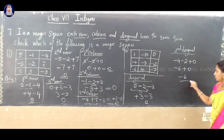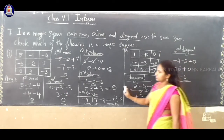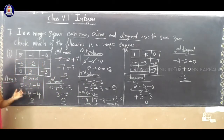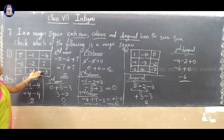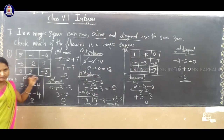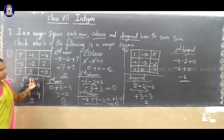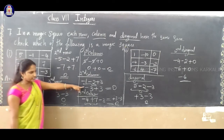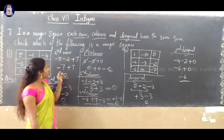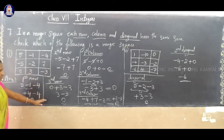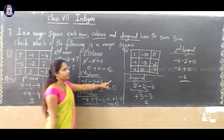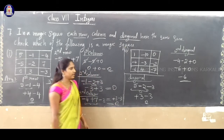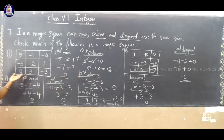Did we get answer 0? No. Here, the answer we got is minus 6. All other rows and columns gave 0, but one diagonal gave a different answer. So, the first square is not a magic square, because the second diagonal sum is minus 6, not 0 — we got a different answer.